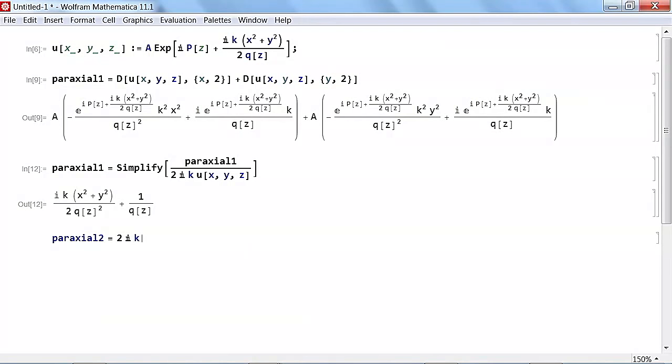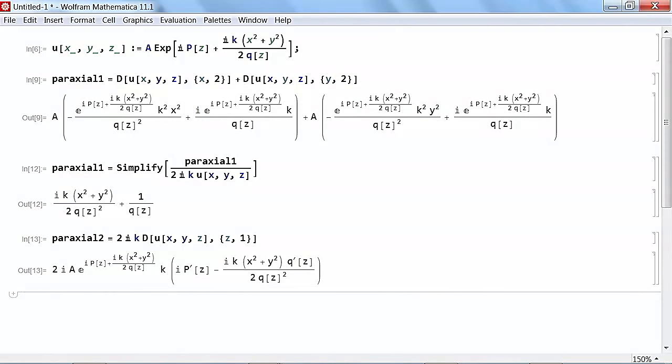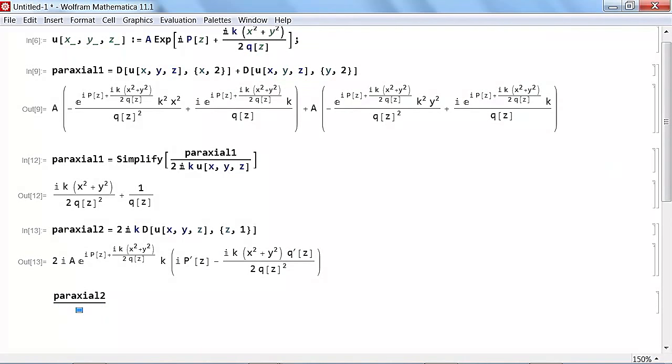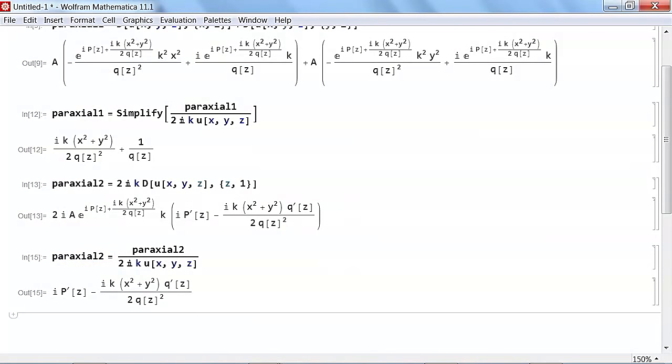Again, this doesn't look so helpful, but remember we divided by 2I times K times U of X, Y, Z. Didn't have to simplify that at all, so let's redefine that as Paraxial 2. And now we just add the two bits together and demand that they be zero.